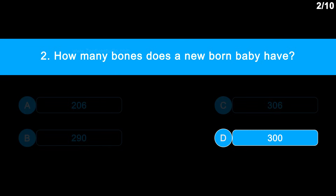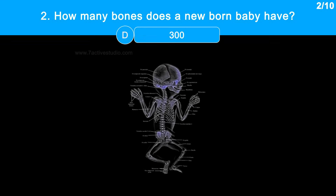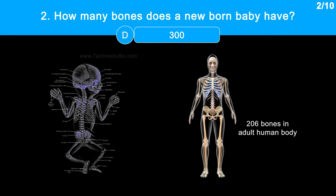The correct answer is option D, 300. There are about 300 bones in a newly born baby. At birth, the newborn skeleton is a work in progress, and many of the bones blend together during growth years to form the 206 bones that adults have.